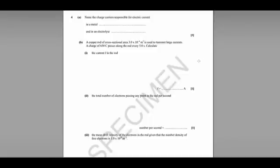Question four moves us into the electrons, waves, and photons side of the course, and it begins with a simple recall question. Name the charge carriers responsible for electric current in a metal and in an electrolyte.